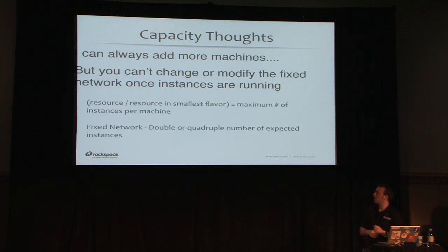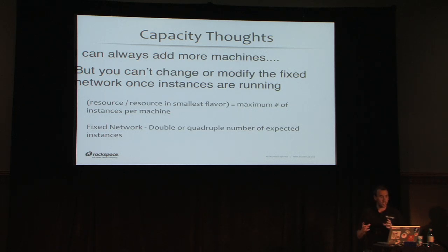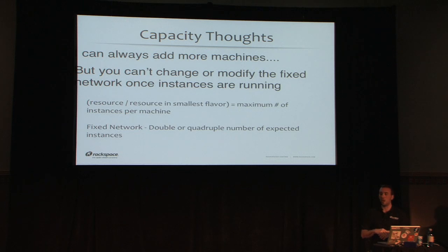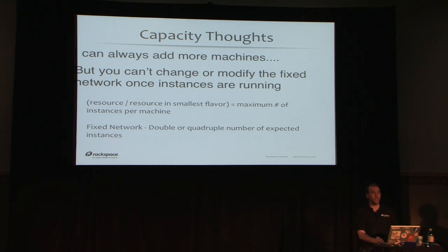For resource utilization, divide the total resource by that resource in your smallest flavor to get the maximum number of instances per machine. This matters when defining your fixed network range — if I define a fixed range of 512 IPs, that's the most instances I'll ever get in my private cloud. You really need to think about what flavors you'll offer and then double or quadruple that number for growth. Most of our customers start with 1,000 or 2,000 IPs even for a very small private cloud.